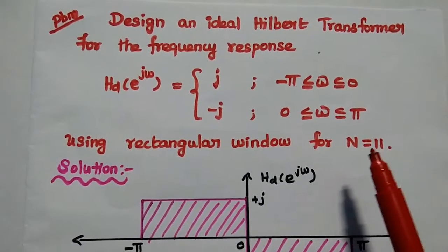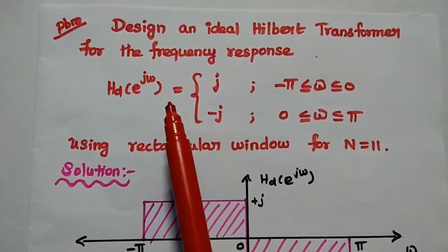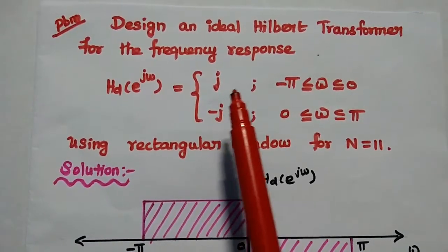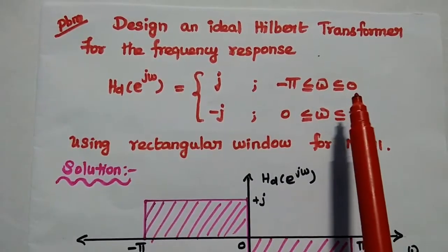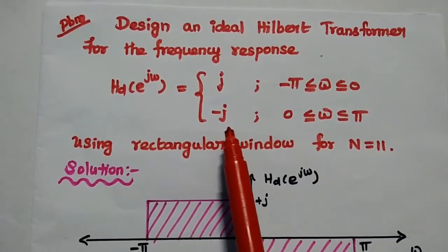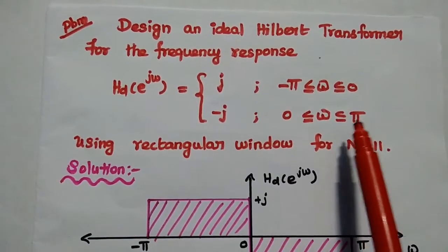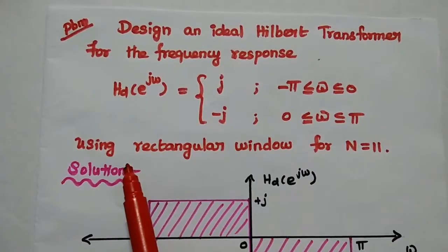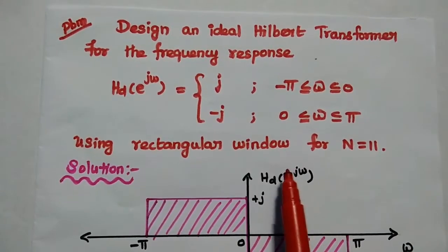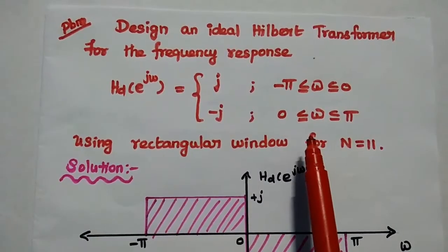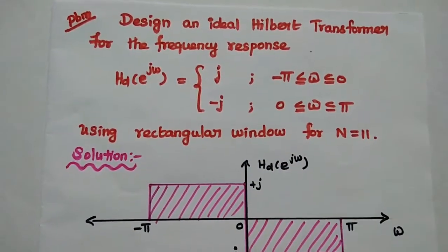Design an ideal Hilbert transformer for the frequency response hd of e^(jω), which equals j when the frequency is greater than or equal to minus pi and less than or equal to 0, and minus j when the frequency is greater than or equal to 0 and less than or equal to pi. We are going to design this Hilbert transformer using the rectangular window method for N equal to 11 samples.